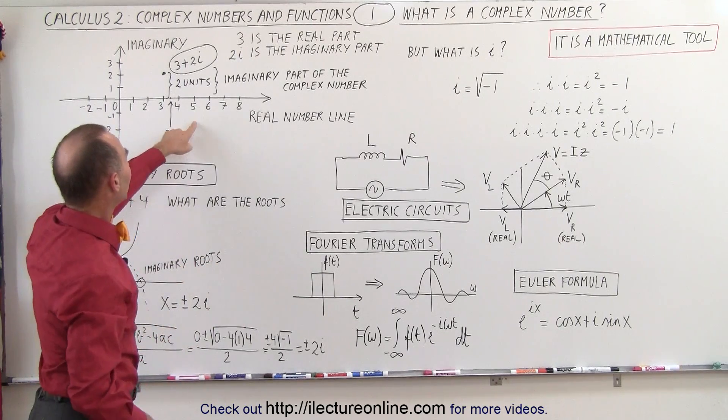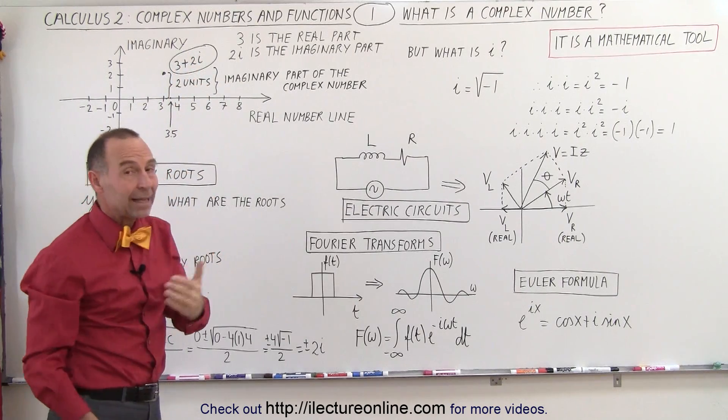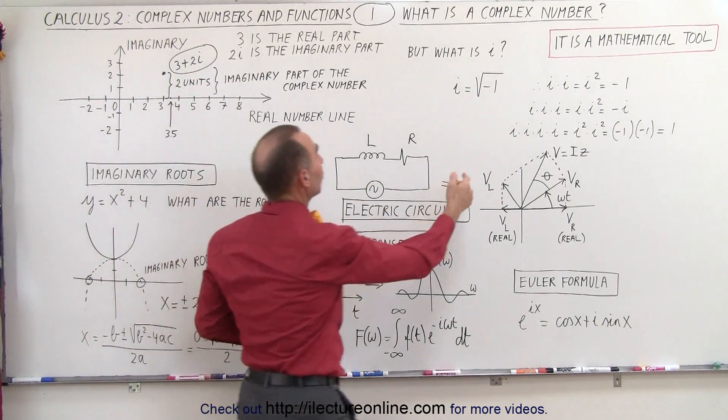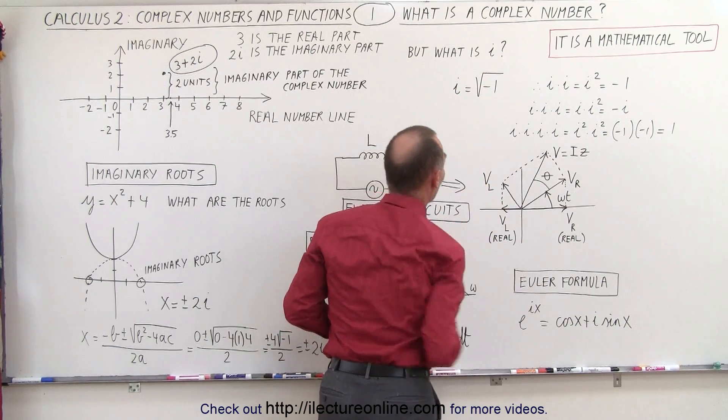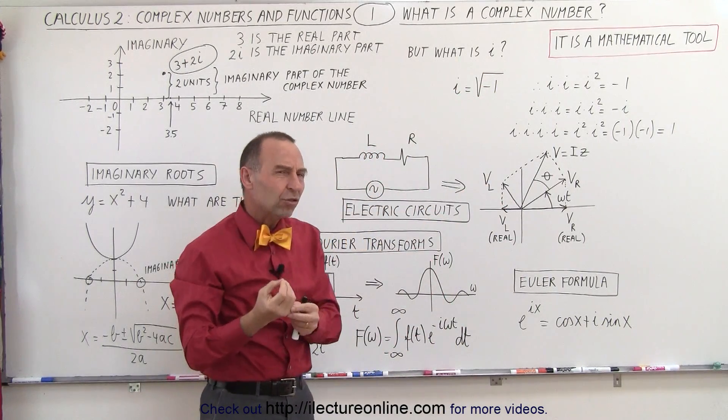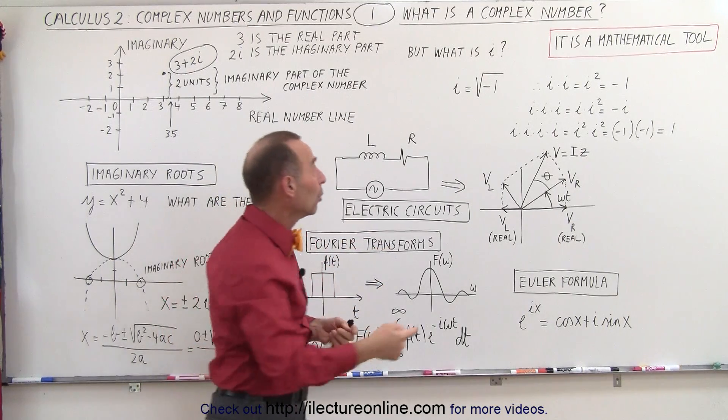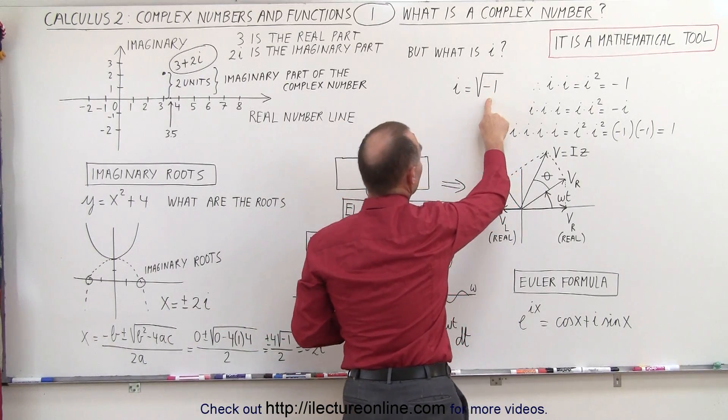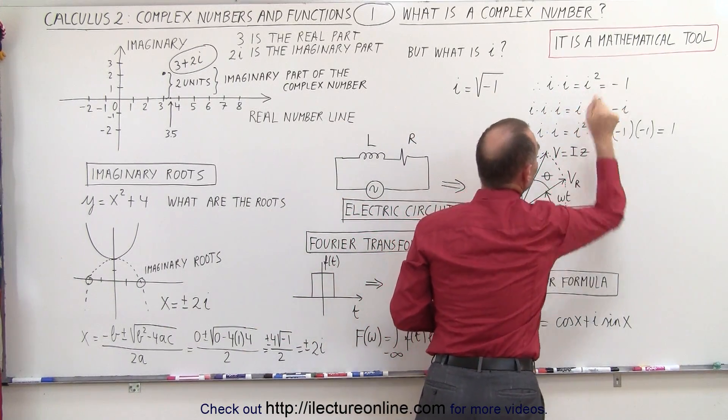First of all, we have to realize that there is an i associated with the imaginary part, and i has a very real definition. i is defined as the square root of negative 1. So if i is the square root of negative 1, that means if we multiply i times i, or if we square i, we should get what's underneath the radical. And indeed, if we go i times i, which is i squared, we get negative 1.